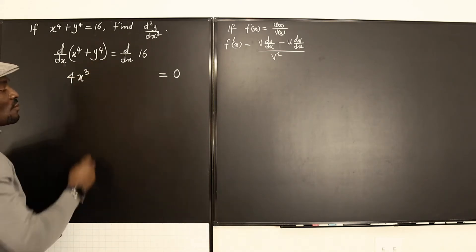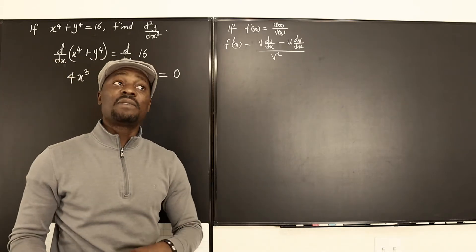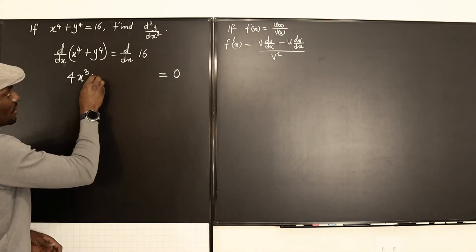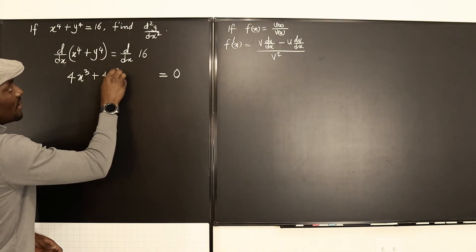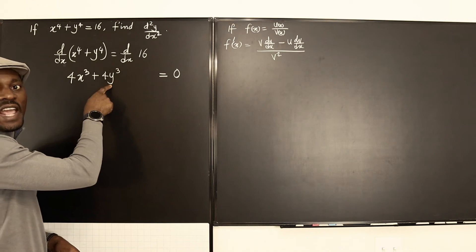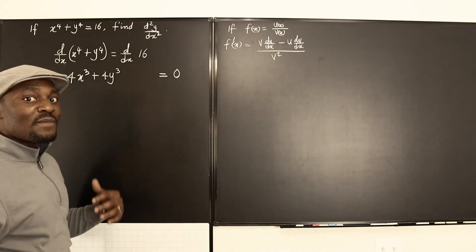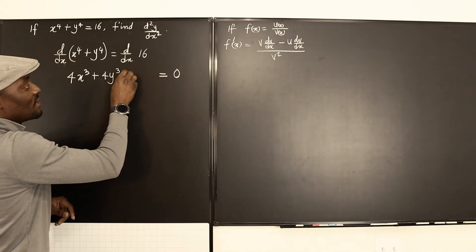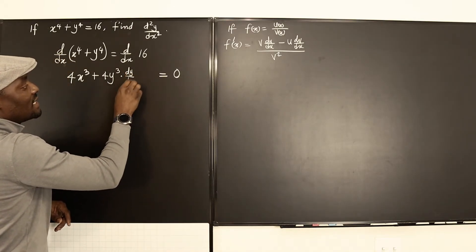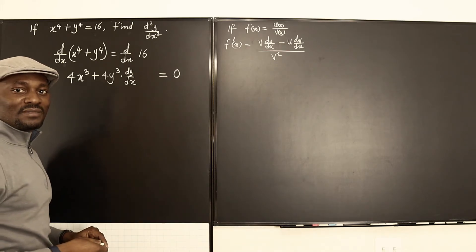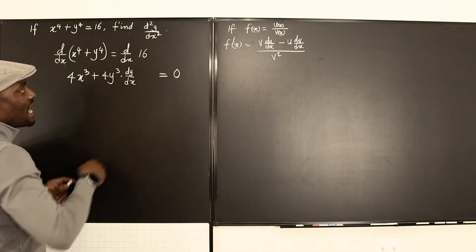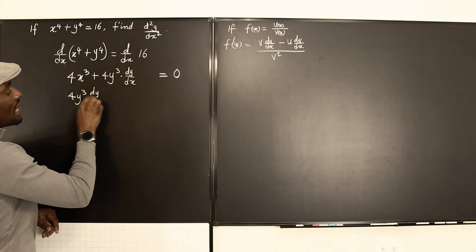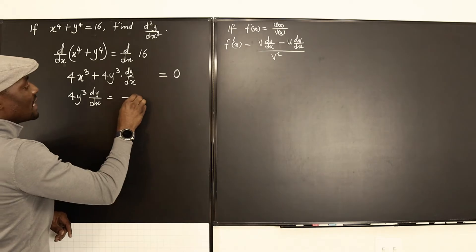On the left-hand side, we differentiate x to the fourth — that's going to be 4x cubed. Now for y to the fourth, you treat it as if it's x to the fourth: you get plus 4y to the third. But this is y, not x, so you have to apply the chain rule. You differentiate y itself, and that gives you dy/dx — and that's where dy/dx comes from.